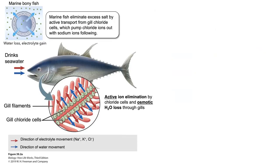I want to do a quick recap of water loss and osmoregulation in bony fishes. We'll first look at a marine bony fish. If you're looking at a marine bony fish, they're dealing with a hypertonic solution — they're in salt water where there are a lot more salts dissolved in their environment than typically are in their cells. The big pressures marine bony fish face are water loss through osmosis and electrolyte gain, because the water they take in has so much salt in it.